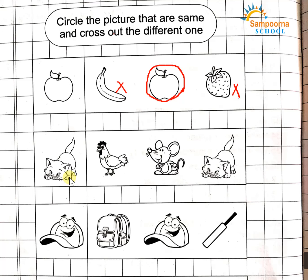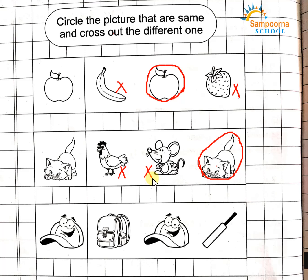Cat, cat. This one is called hen. This one is called rat. So here is cat — this picture is similar, the same. We will circle this picture. And which is different, which we will not match, we will cross out.